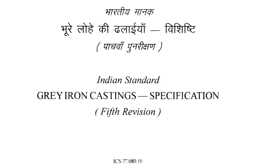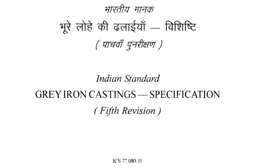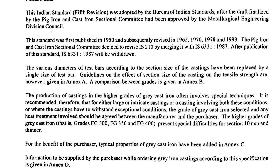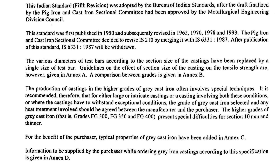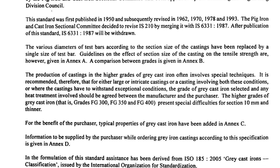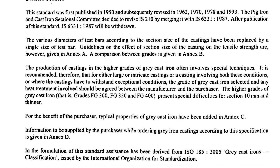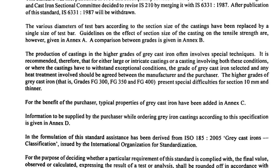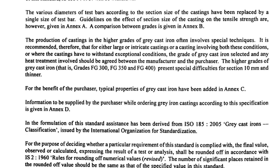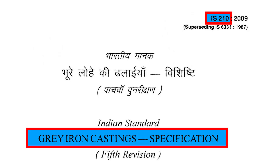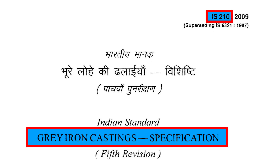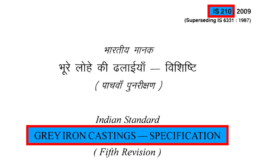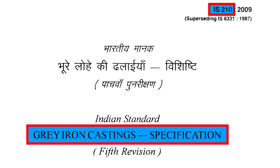So what is Grey Cast Iron? It's a type of iron that's widely used in industries for its unique properties, and to make sure it's up to standard, we have something called IS-210, an Indian standard that checks if Grey Cast Iron is just right for the job.